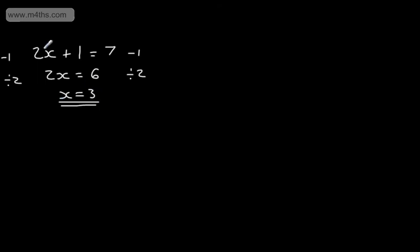We check that that works: 2 times 3 is 6, plus 1 is 7, so we can say that is correct. What we're now going to consider are equations when we have the unknown on both sides.